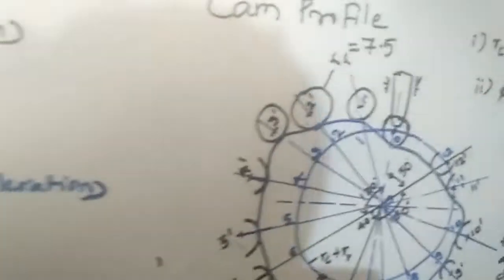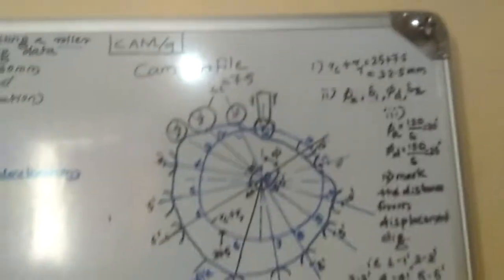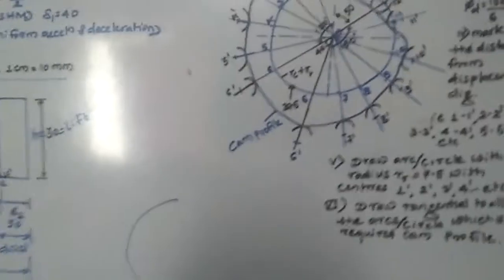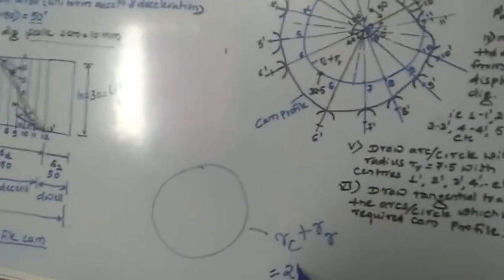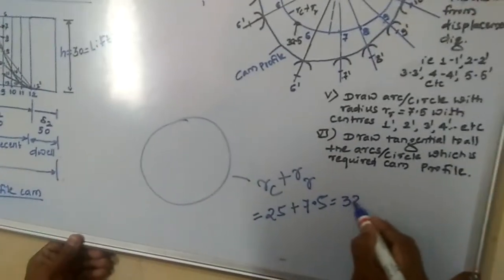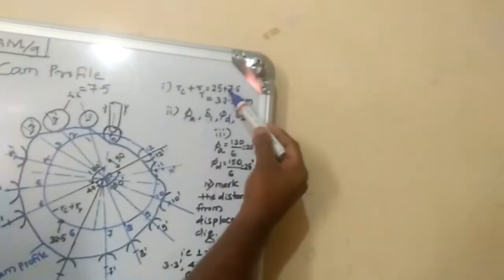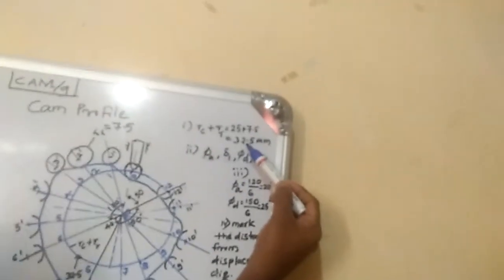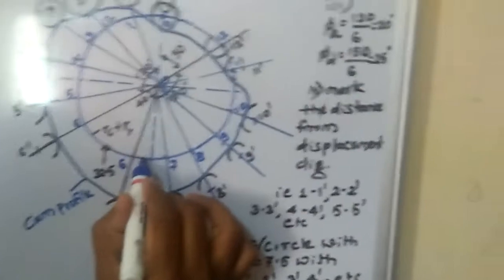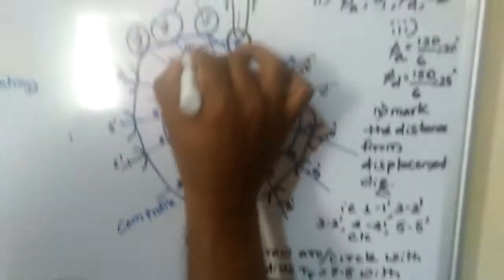Now I will come to the cam profile — how to draw it. First, you draw a circle with radius equal to RC plus RF. That is 25 plus 7.5, which comes to 32.5 mm. This is the first circle you have to draw. RC plus RR equals 32.5 — that is the first stage.